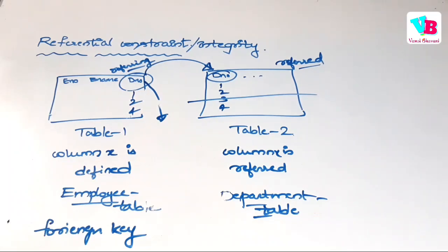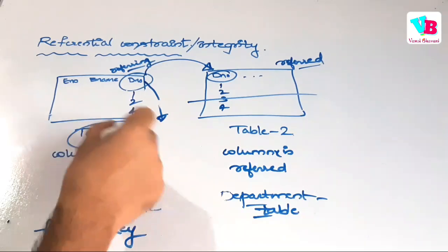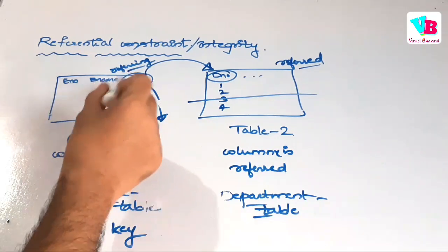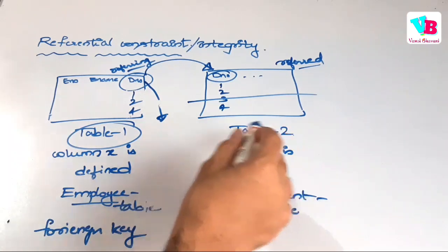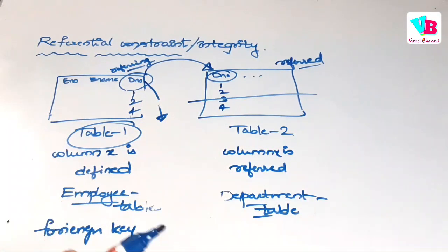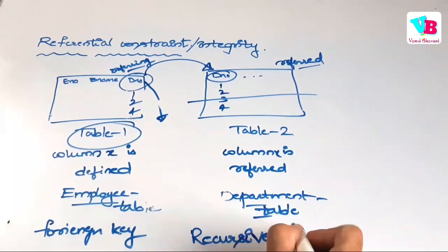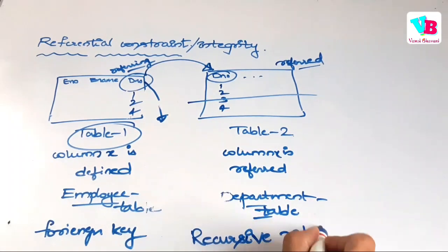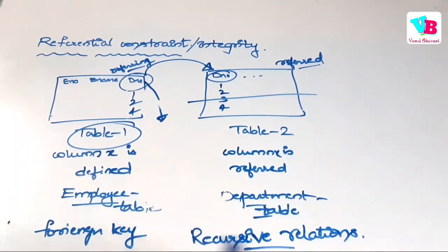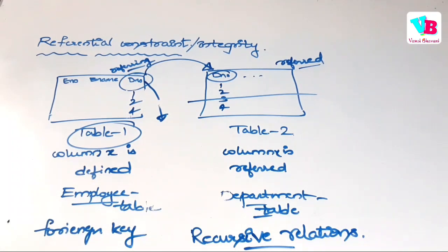If here there is no rule in the different table, then you cannot access that. So, referred and referring are two tables in different tables. But, every single table doesn't exist separately. We have something called recursive relations. In recursive relations, same table, single table, we will have both referring and referred.